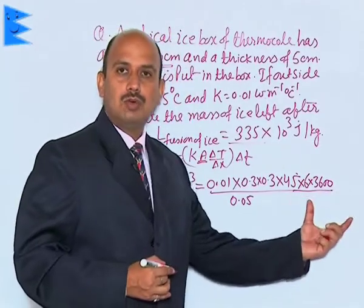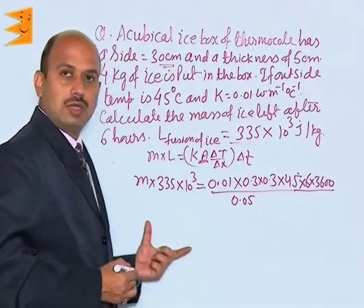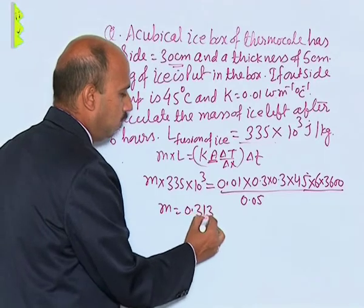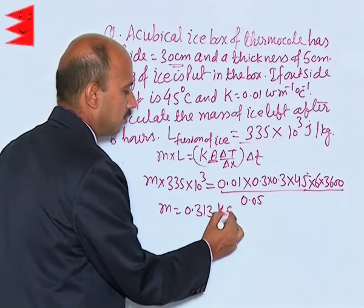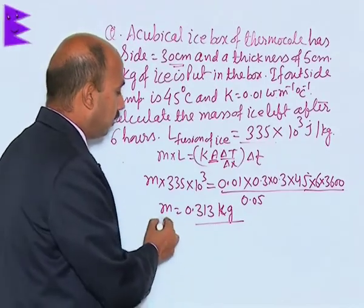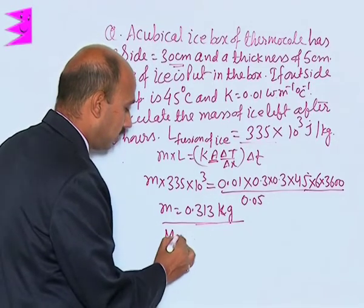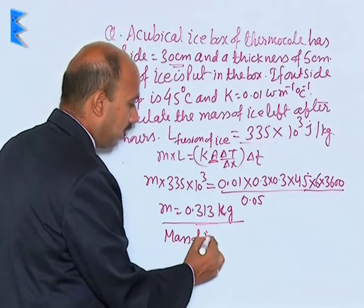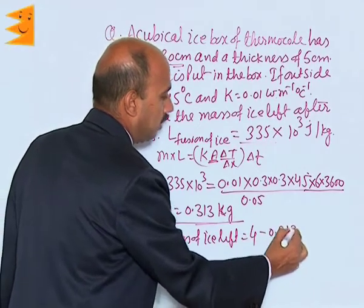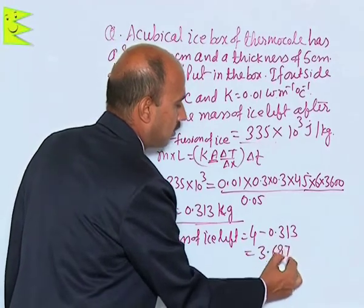I have converted hours into seconds. If you calculate the whole thing, you get M equals 0.313 kg. So this much ice will melt. Therefore, mass of ice left equals 4 minus 0.313, which gives 3.687 kg.